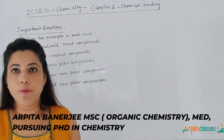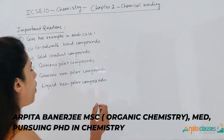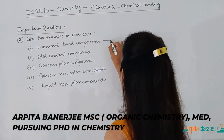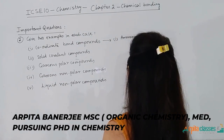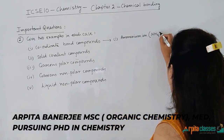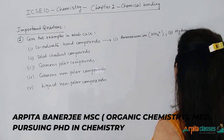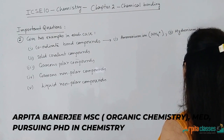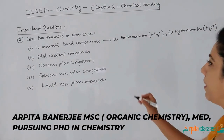The second question says: give two examples in each case. For coordinate bond compounds, the first example is ammonium ion (NH₄⁺) and the second is hydronium ion (H₃O⁺). These are the two coordinate bond compounds.